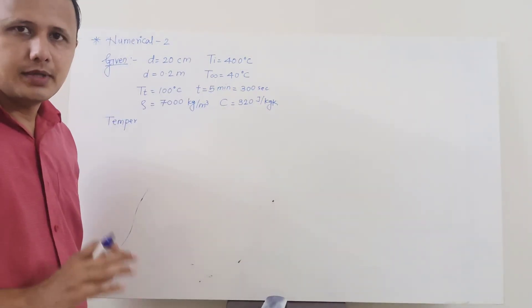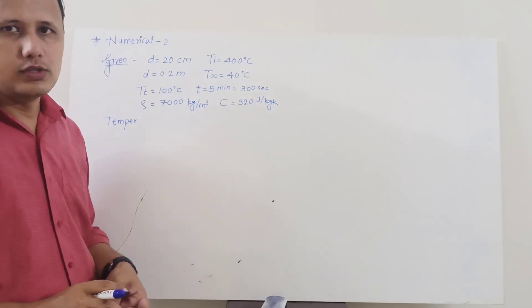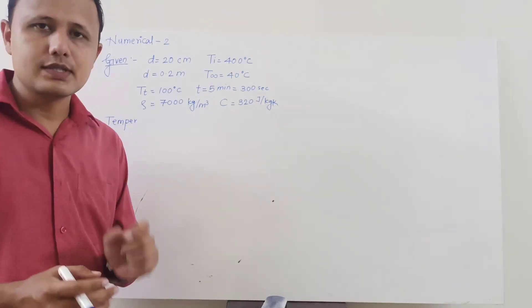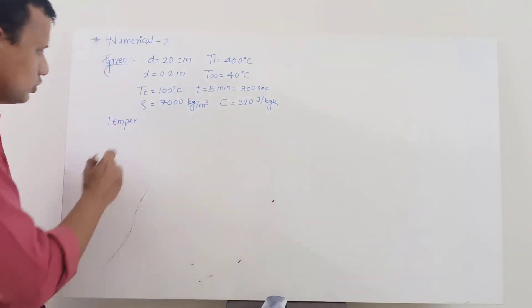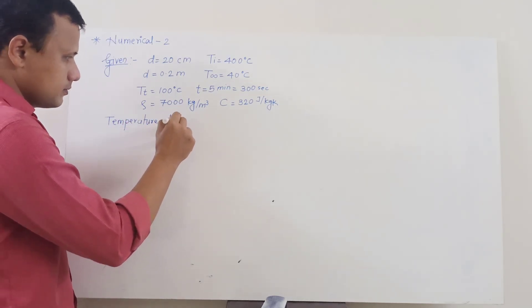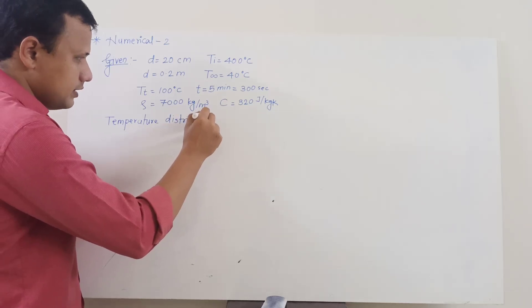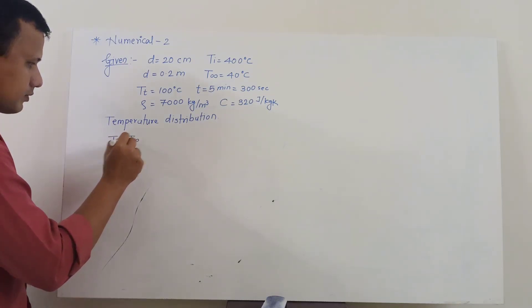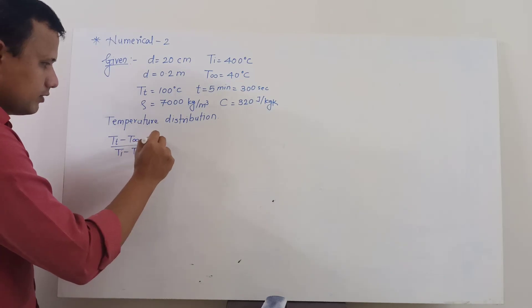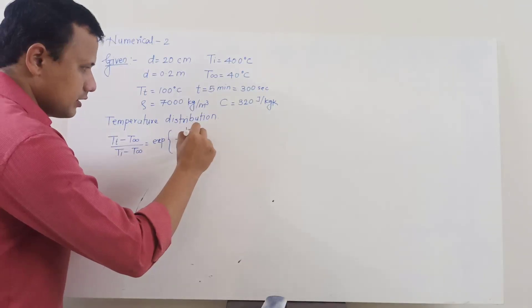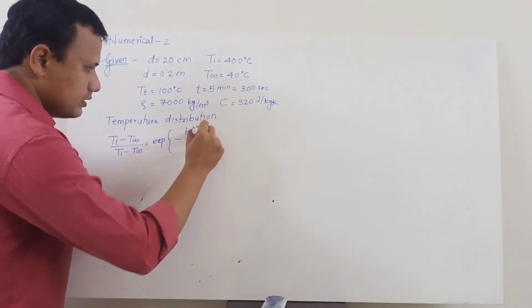So firstly what we need to do, we need to write down the temperature distribution. Already in the problem statement it is mentioned that you can use lump system analysis, you cannot calculate Biot number over here because heat transfer coefficient is not available. So the temperature distribution is given as T_t minus T_infinity upon T_i minus T_infinity will be exponential of minus h A_s t upon rho V C.